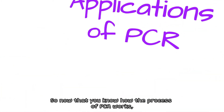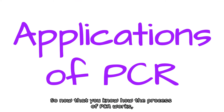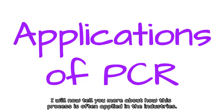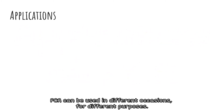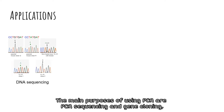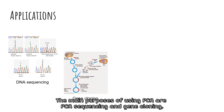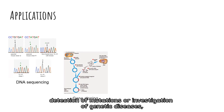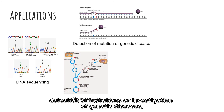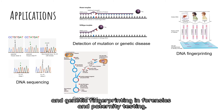Now that you know how the process of PCR works, I will tell you more about how this process is often applied in the industries. PCR can be used in different occasions for different purposes. The main purposes of using PCR are PCR sequencing and gene cloning, detection of mutations or investigation of genetic diseases, and genetic fingerprinting in forensics and paternity testing.